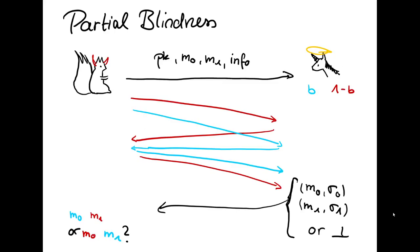We want two security properties. The first security property is the partial blindness. This is supposed to protect honest users from malicious signers and informally we want that the signer does not learn which message he's signing during the signing protocol.